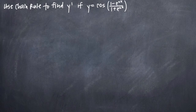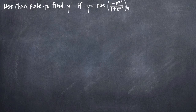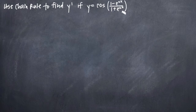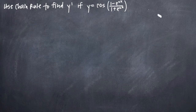In this particular problem, we've been asked to use chain rule to find y prime, or the derivative of y, if y is equal to cosine of the quantity 1 minus e to the 2x divided by the quantity 1 plus e to the 2x. When it comes to using chain rule to take the derivative, the first thing we need to do is identify an outside and an inside function.